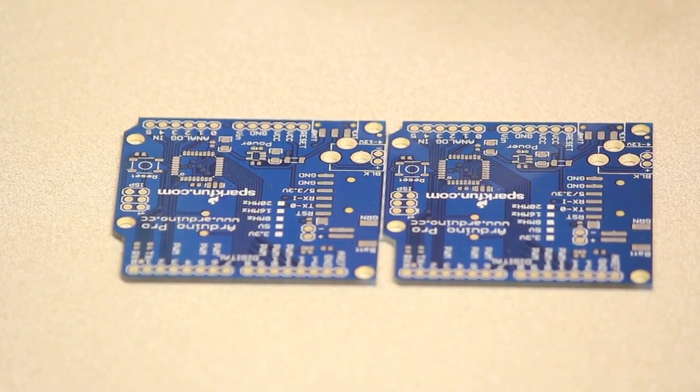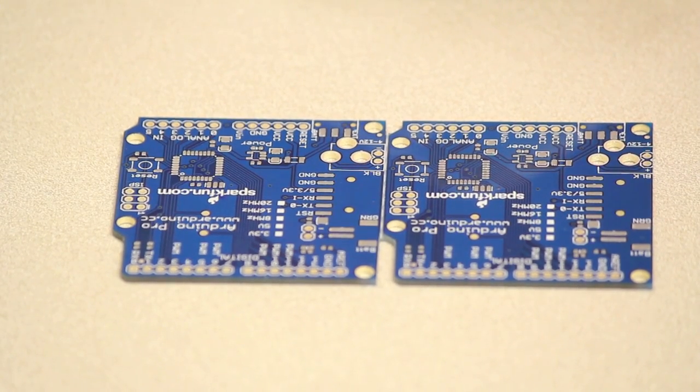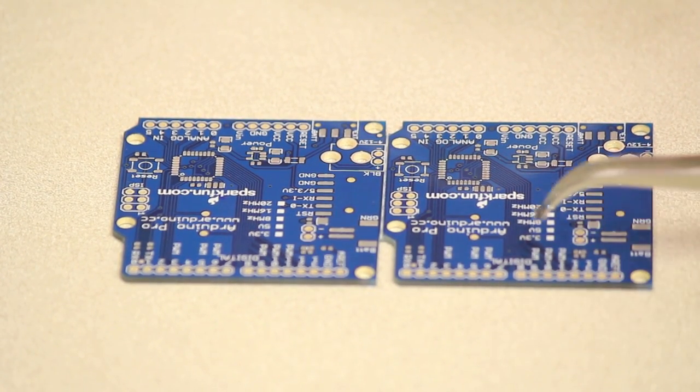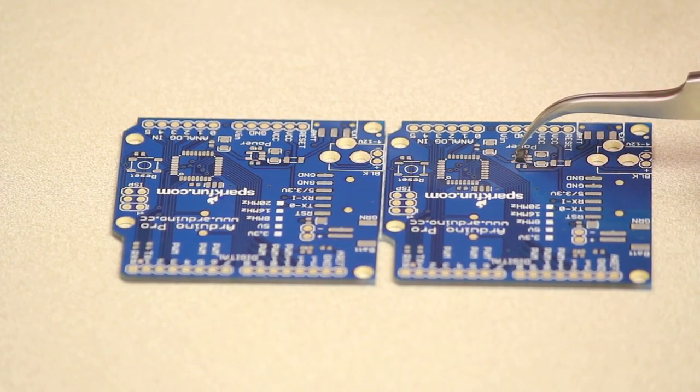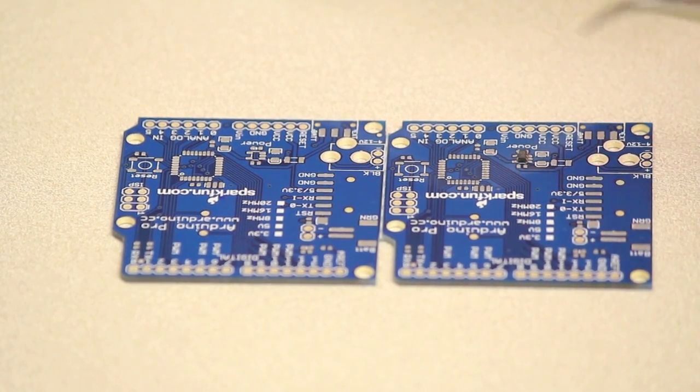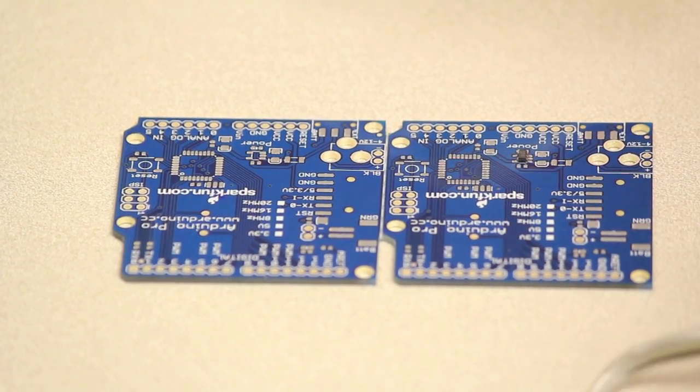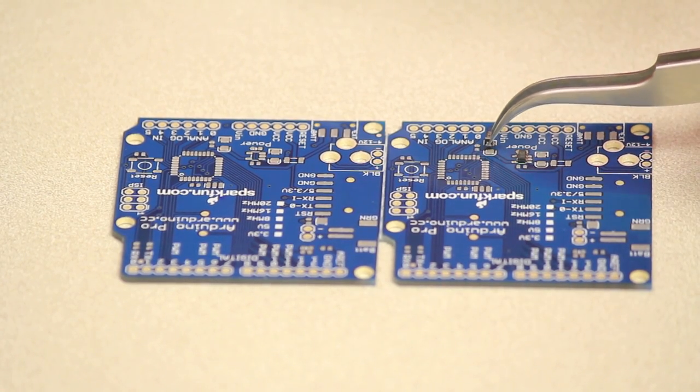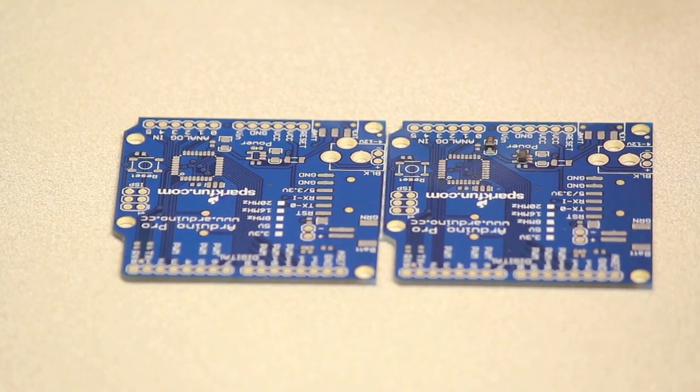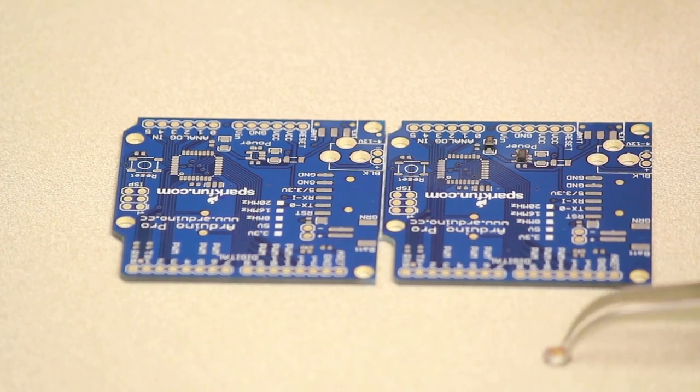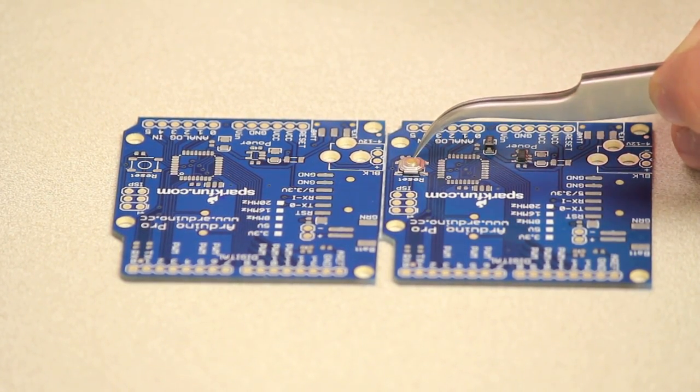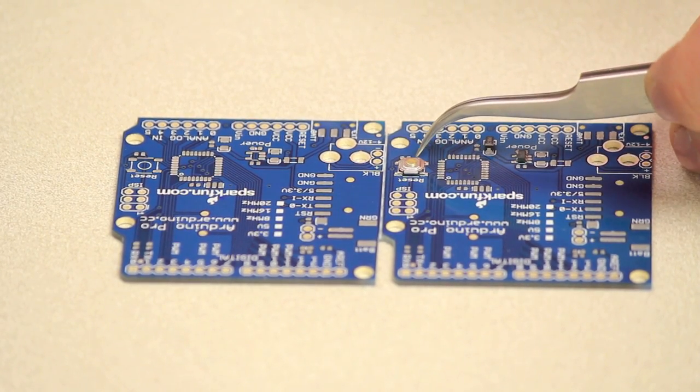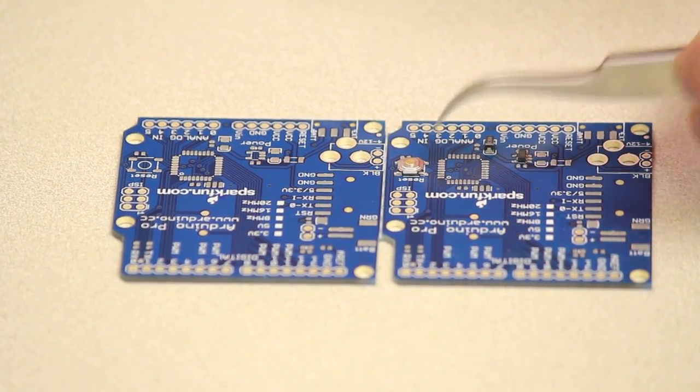So now that we have our board pasted, we're ready to populate it with the SMD components. A good trick is to start with the smaller components, such as caps and resistors, and work your way up to the larger components. That way you're not reaching over larger ones to populate the small ones. Things to look out for are polarized components, such as this capacitor right here. You want to make sure those go on correctly. And also, when you're putting the components on, you want to just gently set them on. And if they're a bit crooked, you want to just nudge them into place so you don't smear the paste.